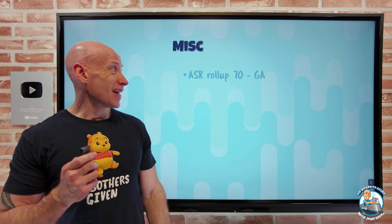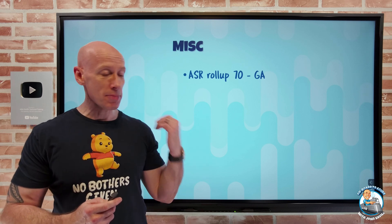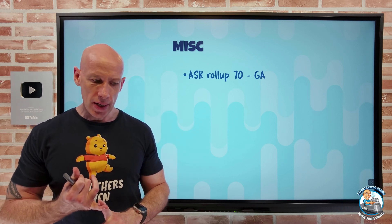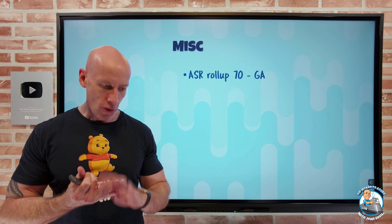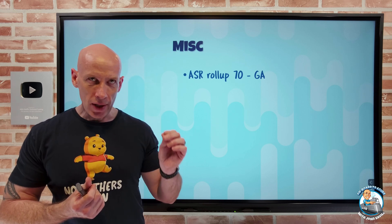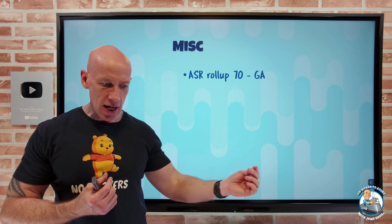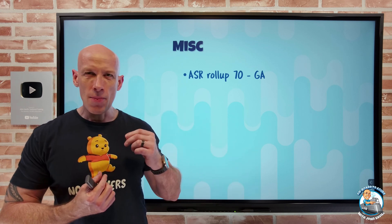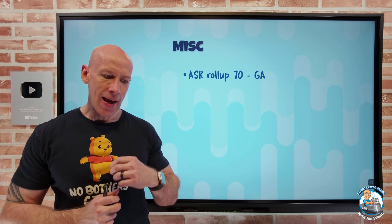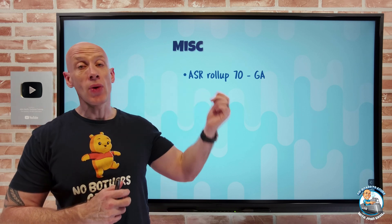And then miscellaneous: Azure Site Recovery has rolled up 70. This is really about RHEL 8.9, Oracle Linux 8.9, and Rocky Linux 8.9 being supported for Azure to Azure and modernized VMware — i.e., it's using the appliance — and physical going to Azure.